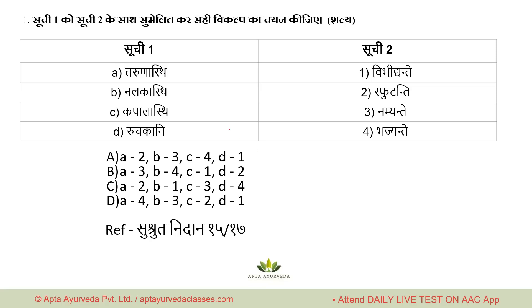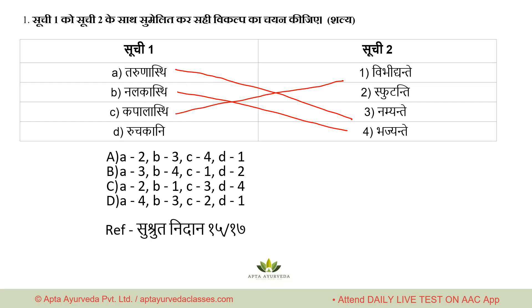Tarunasthi — its characteristic is Namayante (bends). Nalakasthi — from 'nal', marrow comes out — Bhajayante. Kapalasthi — Vibhidyante (it splits/cracks). Ruchakani/Ruchakasthi — Sphuteyante. These four are all important, so they have been given together in one question so you don't get it wrong. The right answer is option B (A-3, B-4, C-1, D-2). Reference: Sushruta Nidana 15, Shloka 17 — Bhagna Nidana. Option B is correct.